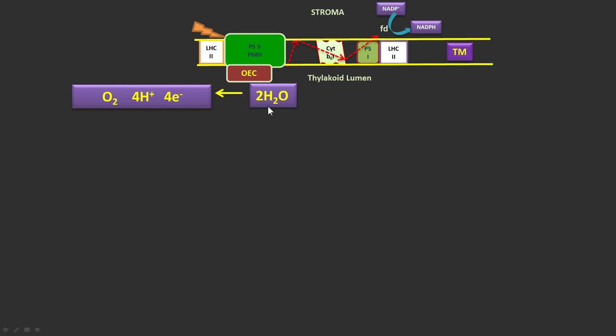When two molecules of water are oxidized, one molecule of oxygen is released, four protons are thrown in thylakoid lumen, and four electrons are given back to the oxidized P680.